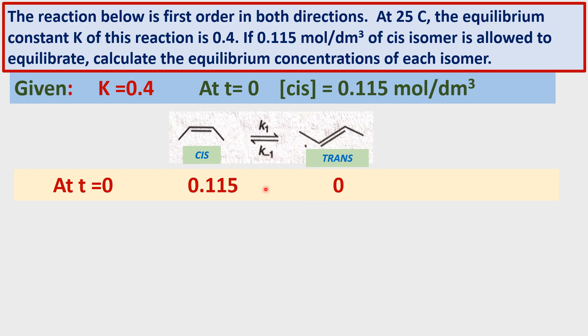At time T equal to 0, only the CIS isomer is present. There is no trans isomer; therefore, its concentration is 0.